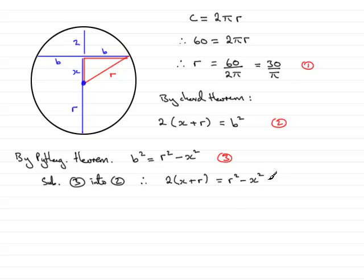Now r squared minus x squared factorizes, so we can write this as r squared minus x squared is the same as r minus x multiplied by r plus x. If you expand that out, you'll get r squared minus x squared. This is often known as the difference of two squares. Now x plus r and r plus x are exactly the same value, so therefore I can divide both sides by x plus r. That would cancel out with that one there. So what we end up with is a nice simple equation that 2 equals r minus x.